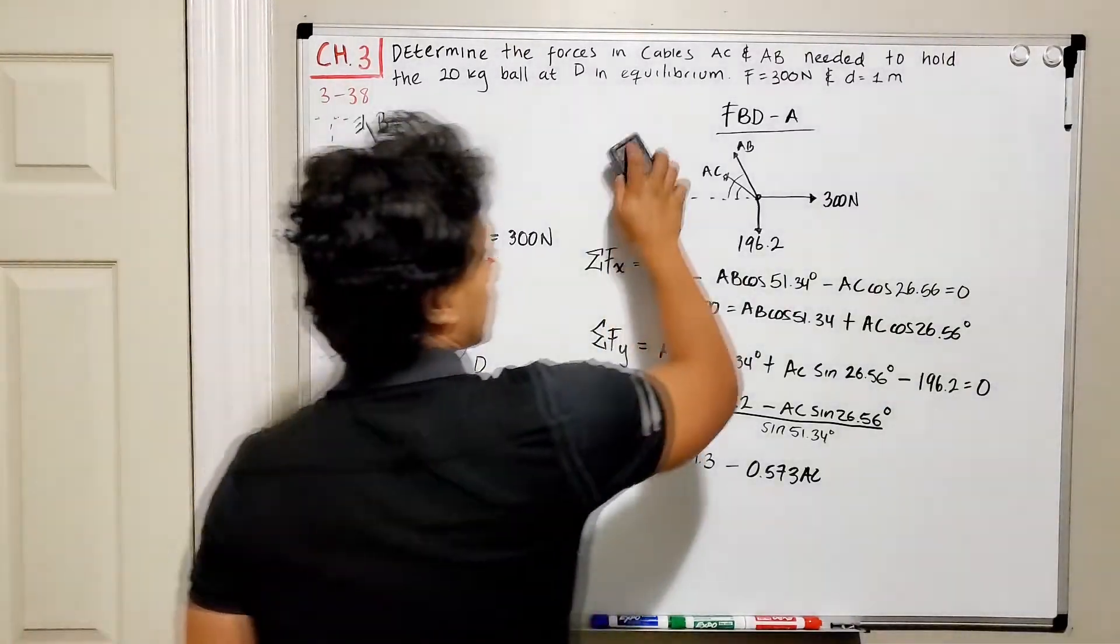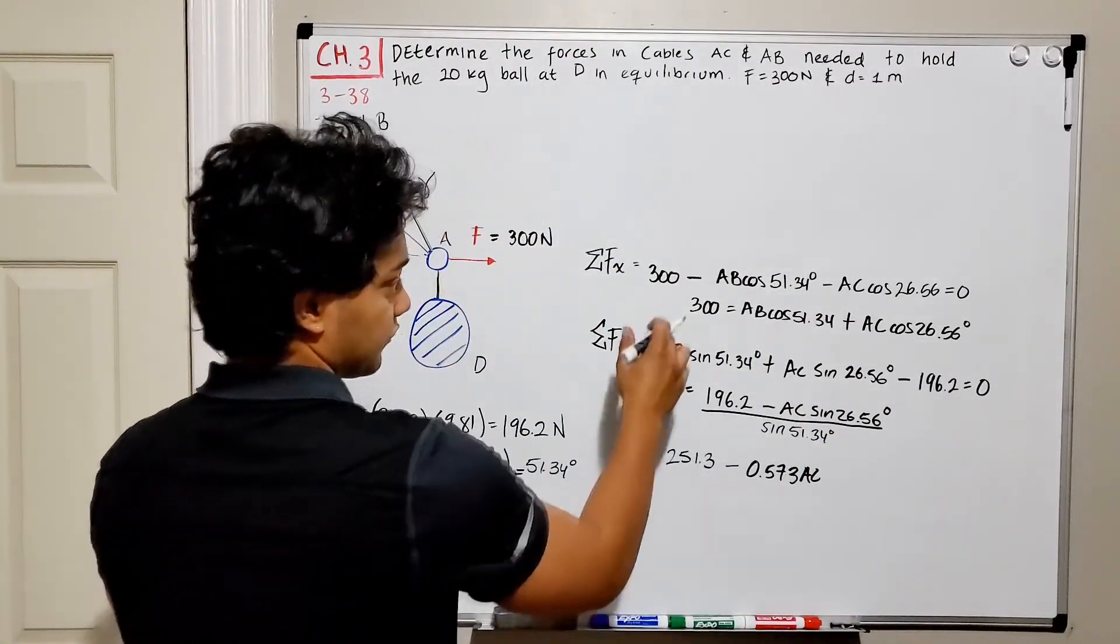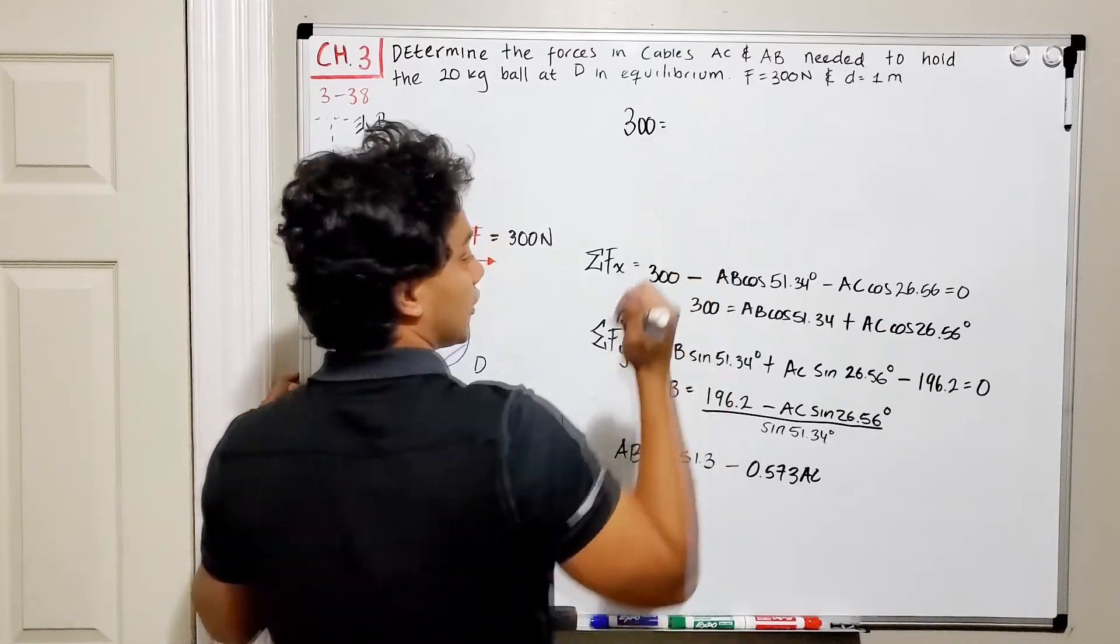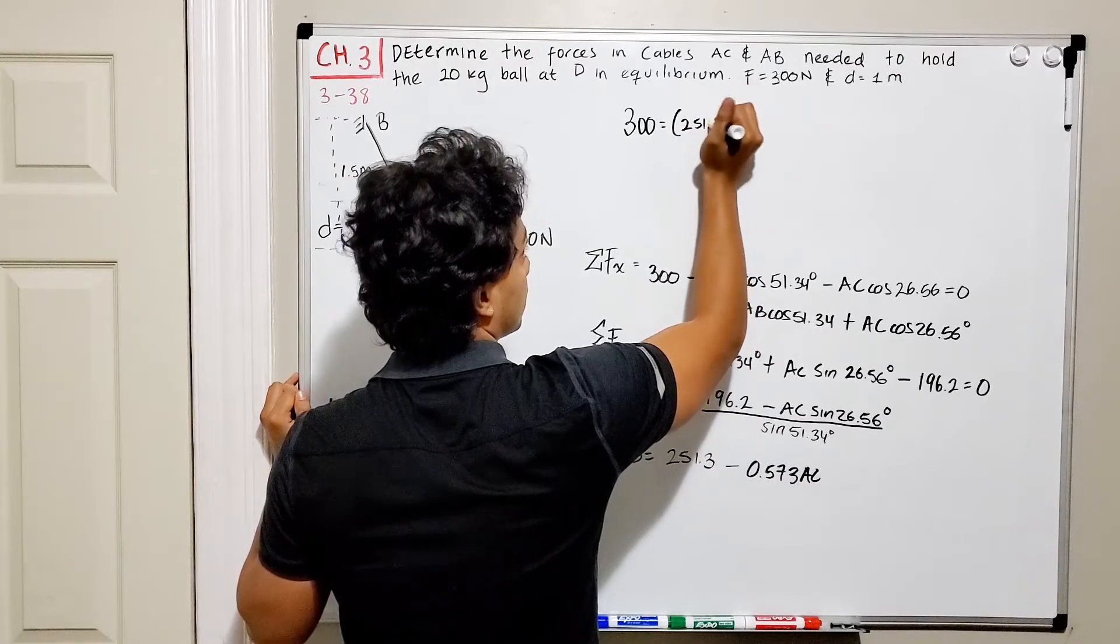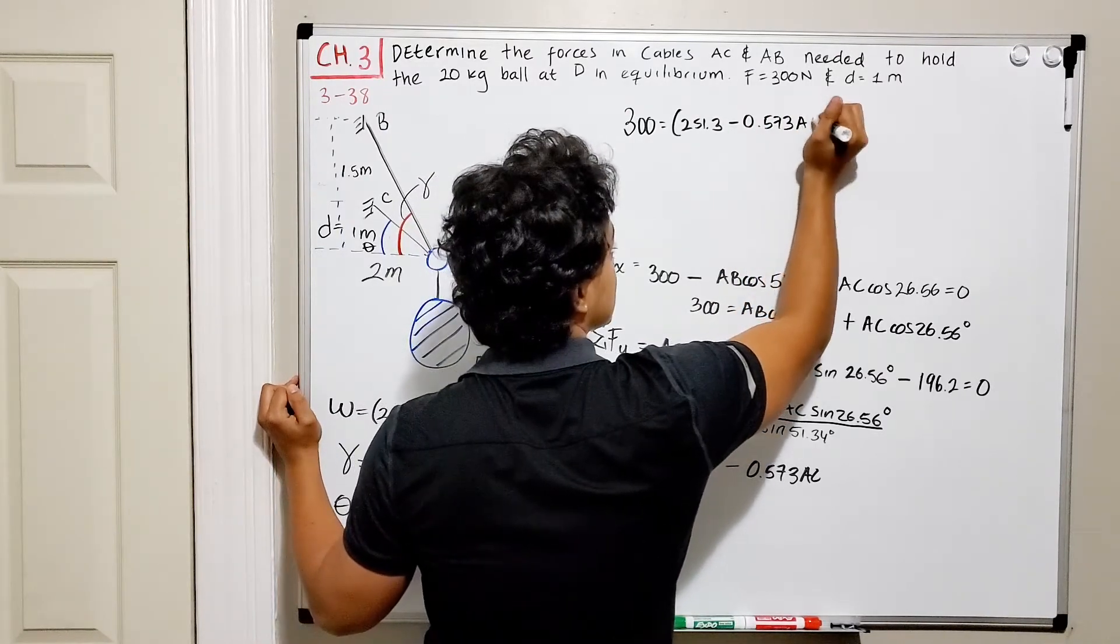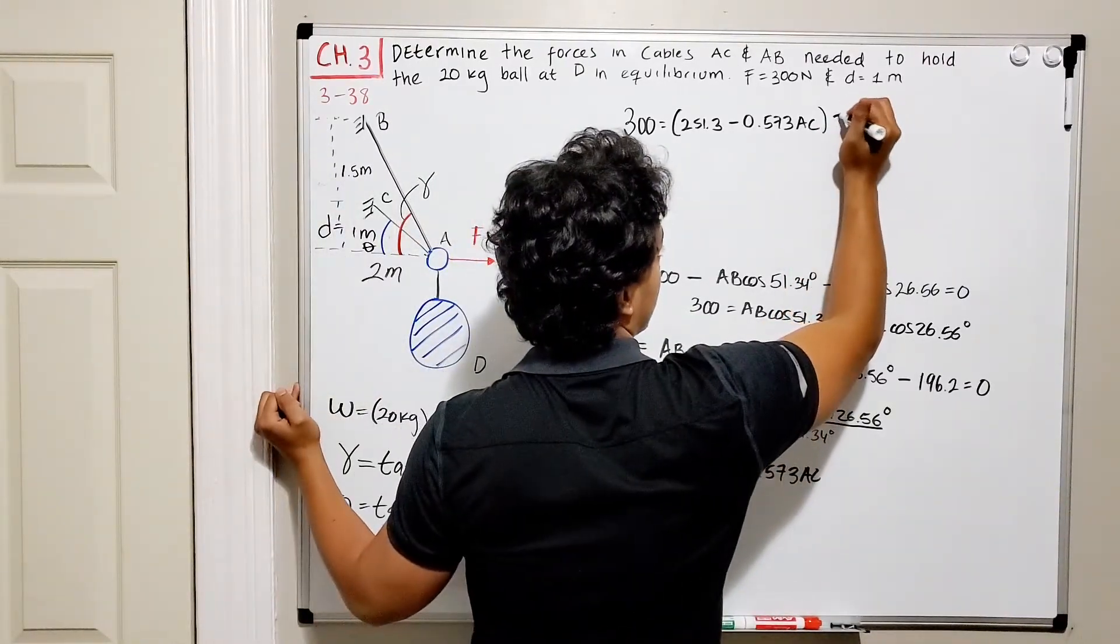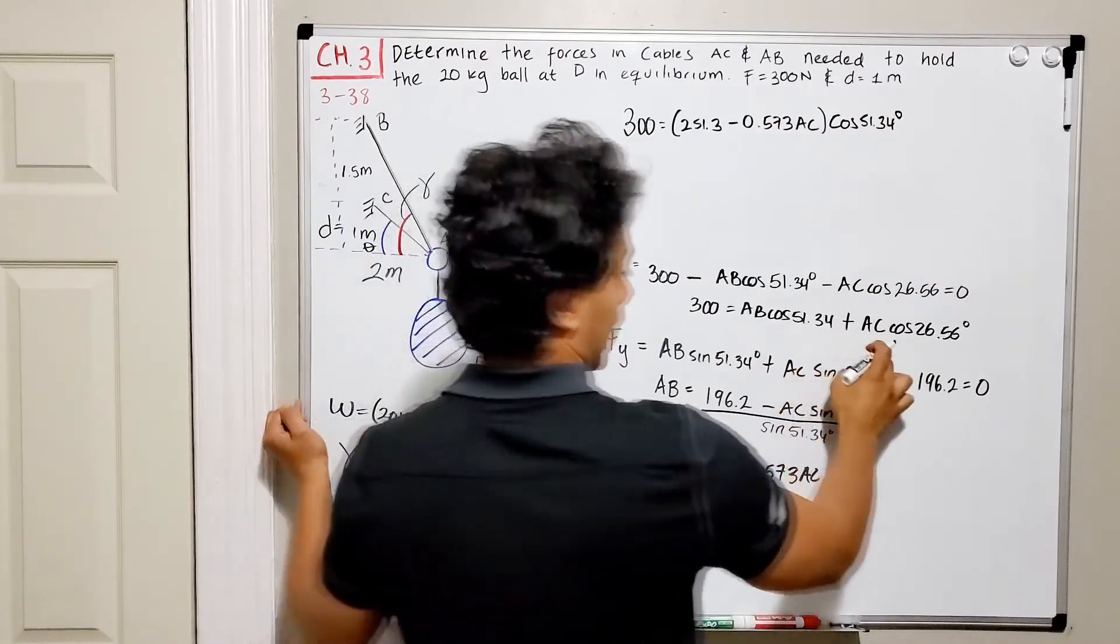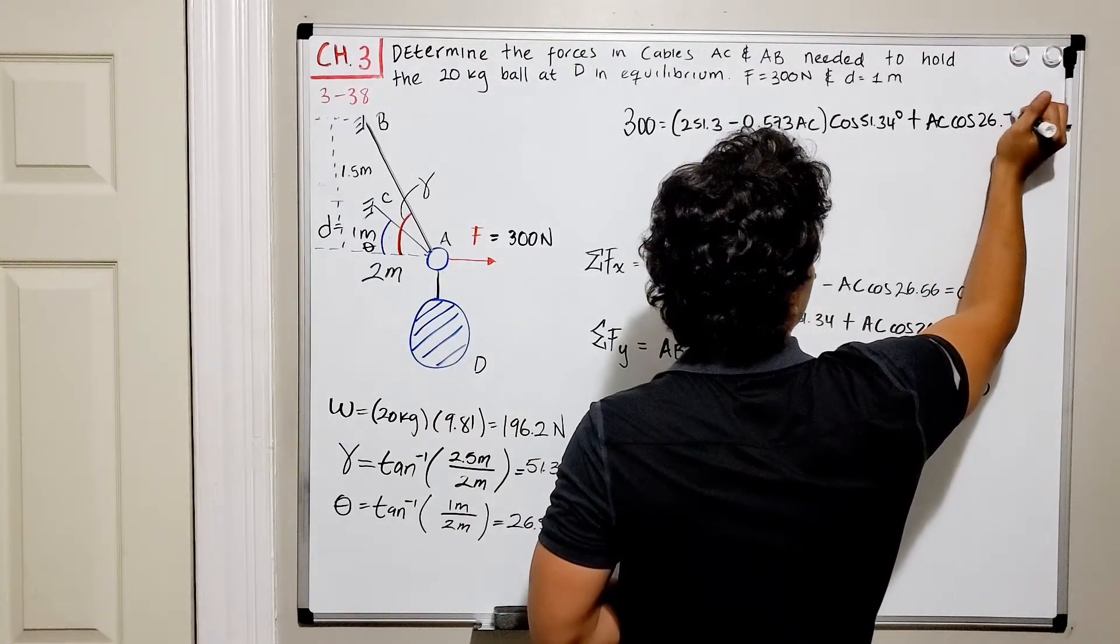Let's erase this over here, so we have more space. And let's plug this guy into this guy. So we got 300 newtons equal to AB, which is 251.3 minus 0.573 AC multiplied by cosine of 51.34, plus AC cosine of 26.56.